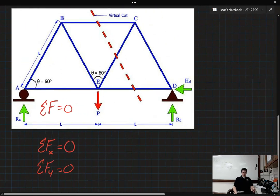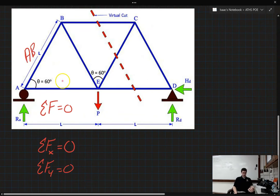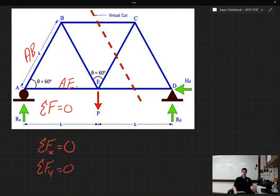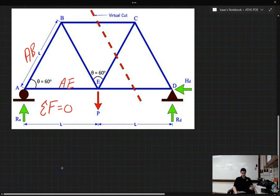Well we've got two members that are acting at this joint. We have member AB and we have member AE. And each of these members is holding some of that weight or applying a force down on that joint A. So let's draw a free body diagram down here of joint A.